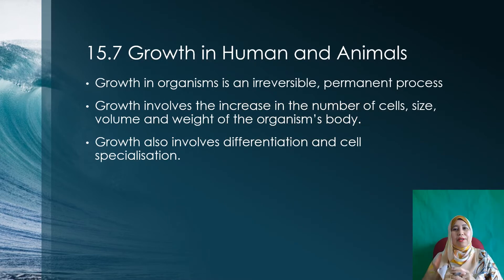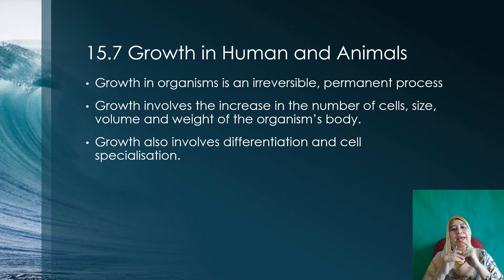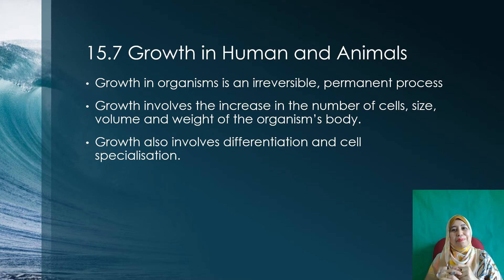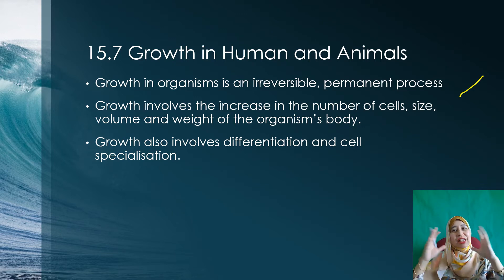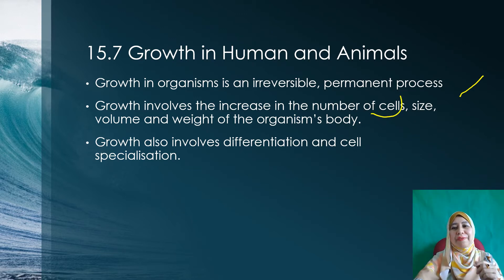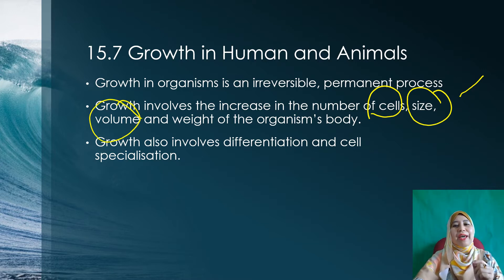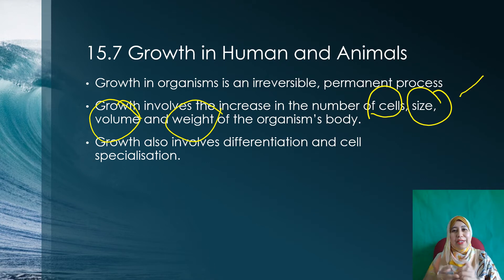The growth in organisms, either humans or animals, is an irreversible process — it is permanent, meaning you cannot reverse it. Growth involves the increase in the number of cells, increase in size, increase in volume, and increase in the weight of the organism.